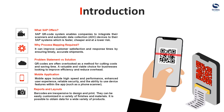SAP QR code system enables companies to integrate their scanners and automatic data collection (ADC) devices to their SAP systems, which is faster, cheaper, and at a lower risk. It can improve customer satisfaction and response times by ensuring timely, accurate shipments. They are often overlooked as a method for cutting costs and saving time. Mobile apps give high speed and performance and an enhanced user experience.